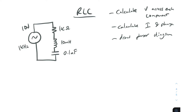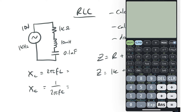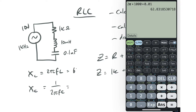Total impedance is calculated by the resistor plus J times (XL minus XC). We already know our resistor is 1k. XL is simply 2πFL, and XC is 1 over 2πFC. So for XL: 2π times 1000 times 0.01, which gives us 62.83 ohms.